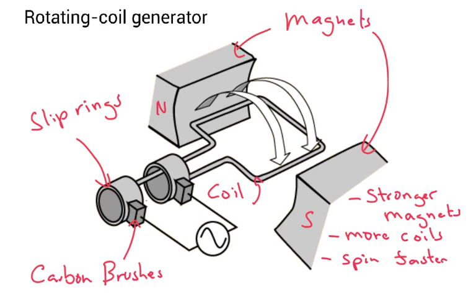So the slip rings and the carbon brushes, they transfer the alternating current to wherever you want it to go, and it avoids this problem of the wire twisting around itself.